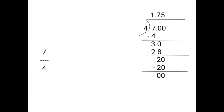7 upon 4 is equal to 1.75. If the numbers are divisible by the divisor after the decimal point, then it is called a terminating decimal form. By putting the decimal point after 7 and continuing the division, I got the remainder 0. You can continue the division by putting the decimal point until the remainder gets 0.